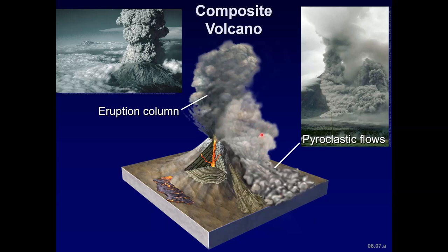You can also have pyroclastic flows down the base of the volcano. Those are violent eruptions of hot gases, ash, and angular rock fragments. They're very destructive. You don't want to be in the pathway of a pyroclastic flow.